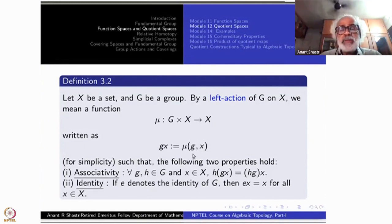Mu of GX we shall write shortly as GX, as if it is the multiplication in G. This notation follows the special case when X is also G and Mu is the multiplication in G. If different actions may be there, then you will have to write it in different notation.